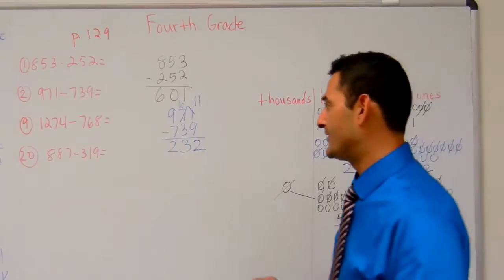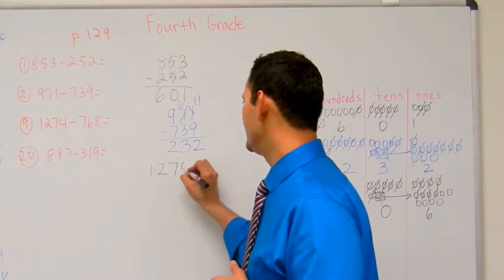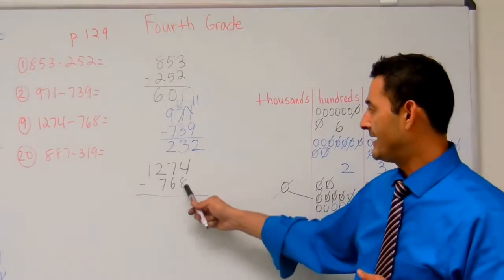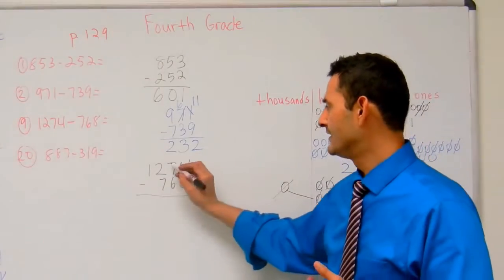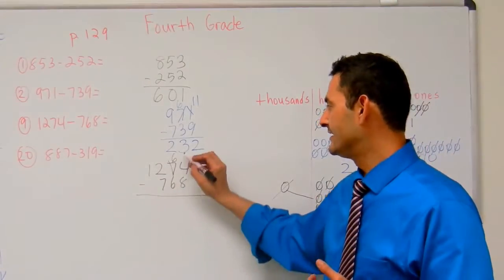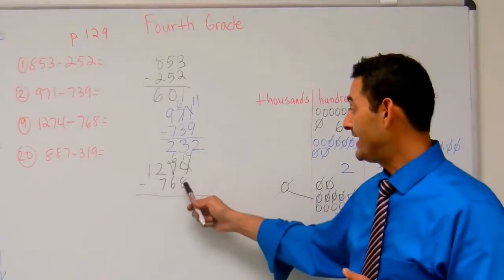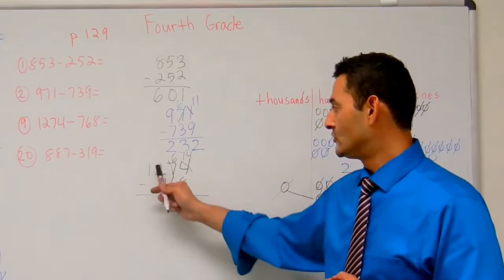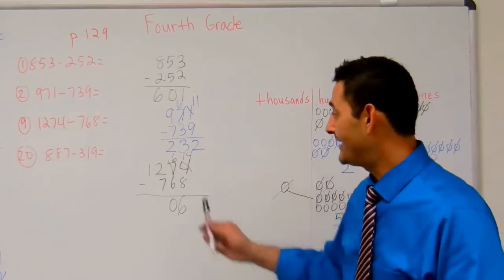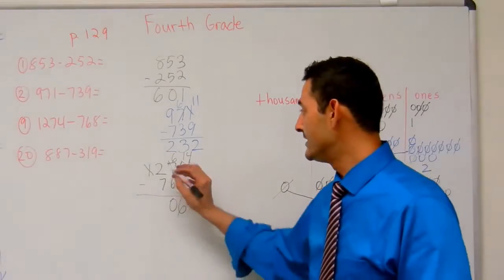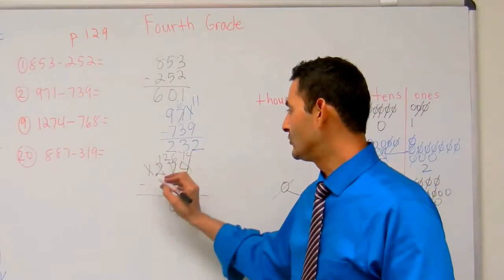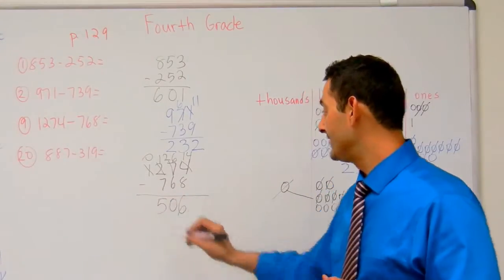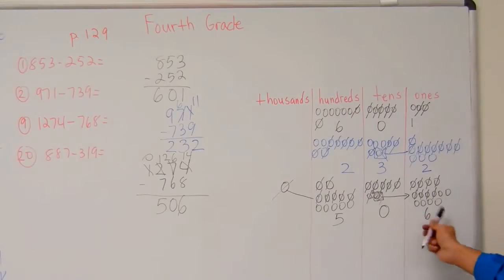Let's go ahead and do that one in the standard algorithm. 1,274 minus 768. Let's go to the ones place — four minus eight, I can't do that. I need to borrow from the tens; that becomes six tens and fourteen ones. Fourteen minus eight is six. Six tens minus six tens is zero. Two hundreds minus seven hundreds — can't do that. I borrow from the thousands, making it twelve hundreds and zero thousands. Twelve minus seven is five. The answer is five hundred six.